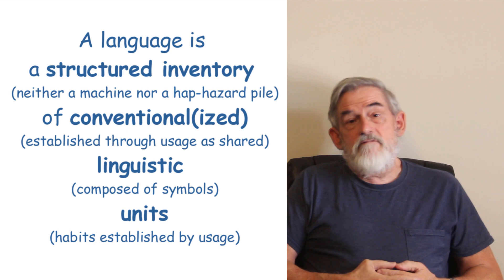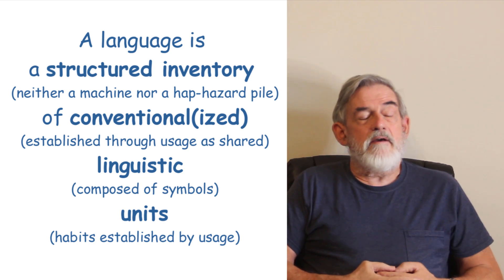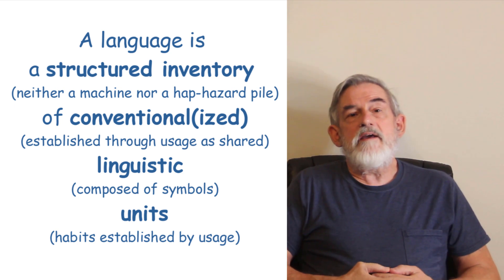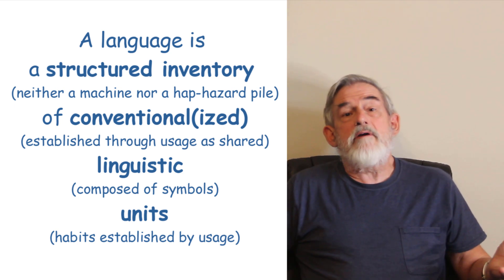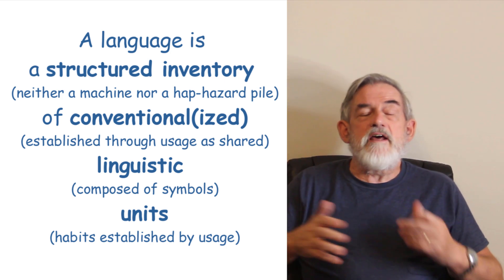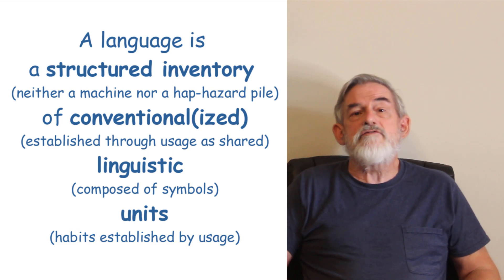Those units make up an inventory. They're not a completely predictable bunch of things, but they are in many aspects like an arbitrary pile of things. On the other hand, it's not arbitrary because it's a structured inventory. There are a number of relationships among the units that give structure to the inventory. Alright then, a language is built out of symbolic structures. Let's take a look at some of the range of those structures.